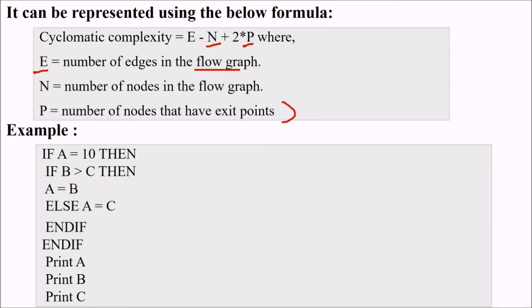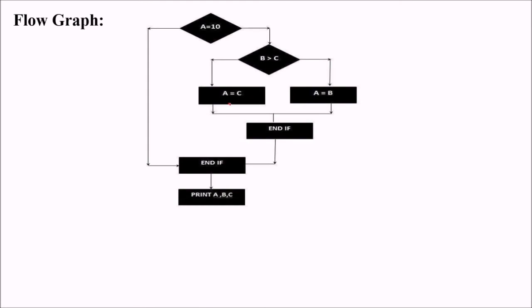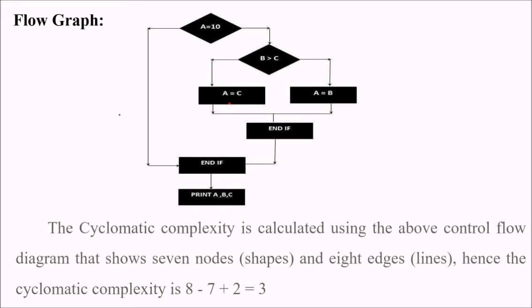If A equals 10, B greater than C, A is equal to B, else A equal to C. A equals 10, B greater than C, A, C, A, B, and end if, end if, and print A, B, C. This is how we can write a simple or make a simple flow graph.